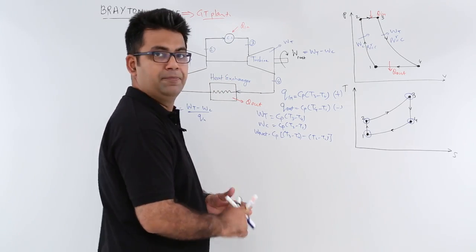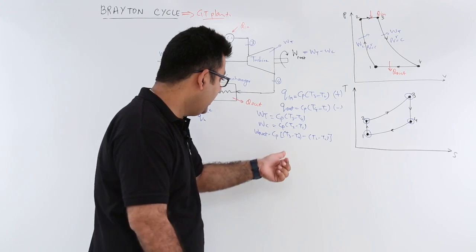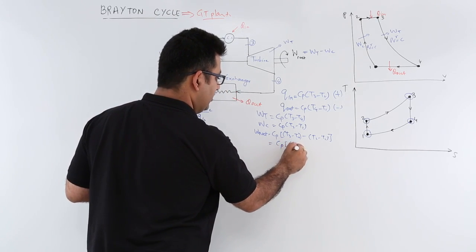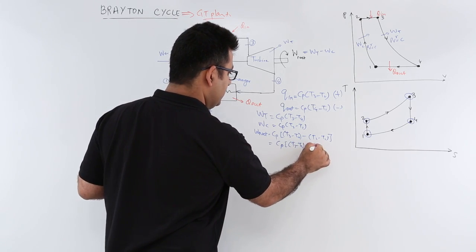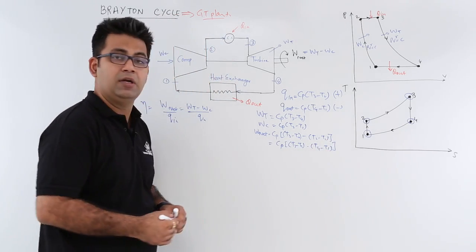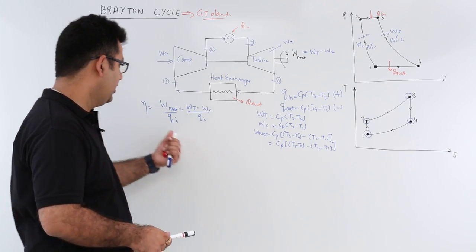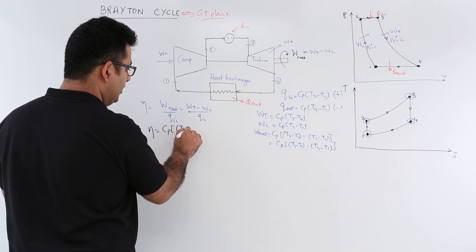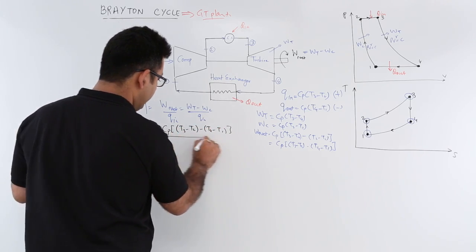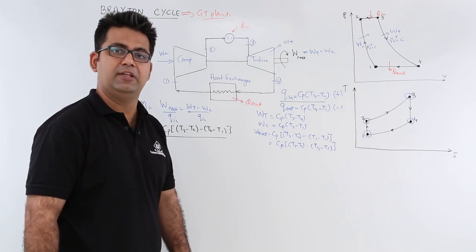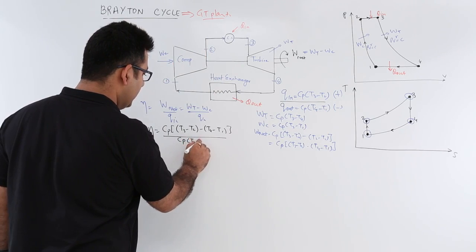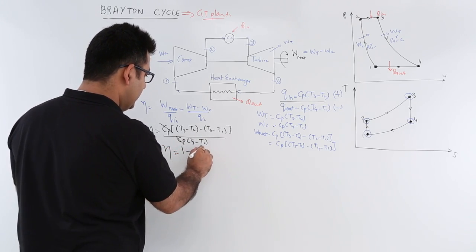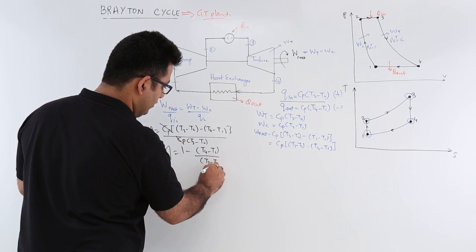Looking at the expression for Q_in, it involves T3 and T2. Combining T3 and T2 in the net work output equation gives cp times (T3 minus T2) minus (T4 minus T1). Substituting into the efficiency equation: efficiency equals cp times [(T3 minus T2) minus (T4 minus T1)] divided by Q_in, which is cp times (T3 minus T2). Striking off cp, the reduced equation becomes 1 minus (T4 minus T1) divided by (T3 minus T2).